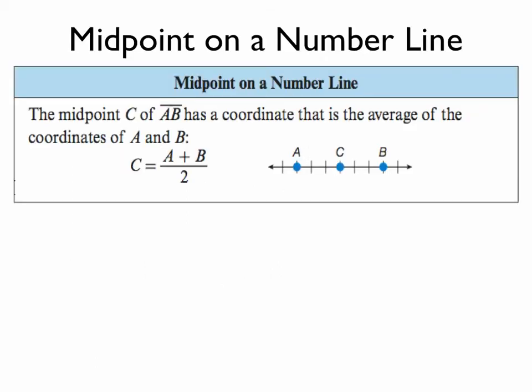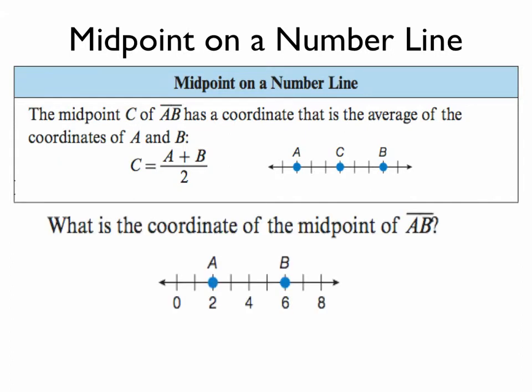So for midpoint, you basically want to think average. The average of the two points is the midpoint. So here let's average to find the midpoint of line segment AB, we're going to average the numbers 2 and 6. 2 plus 6 is 8. 8 divided by 2 is 4. 4 is the midpoint.